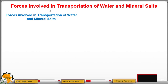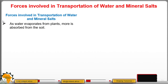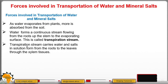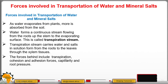Let us now look at the forces that help in transportation of water and mineral salts in the plant. As water evaporates from the plant, more water is absorbed from the soil. Water forms a continuous stream flowing from the roots through the stem to the evaporating surface — this is called the transpiration stream. This stream carries water and salts in solution from the roots to the leaves through the xylem tissues.